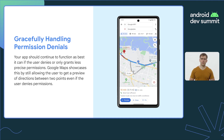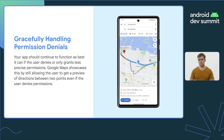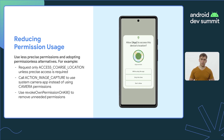For example, if the user does not grant location permission, Google Maps still allows the user to pan around the map, view information about individual locations, and manually navigate by specifying a start and an endpoint.